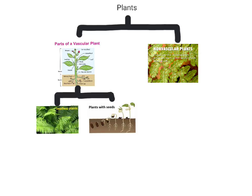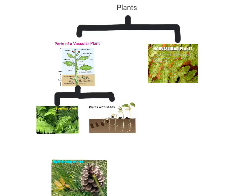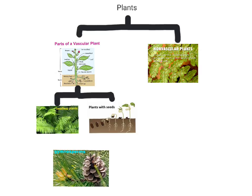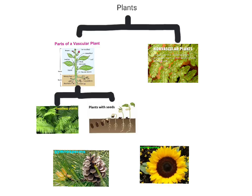Quick review on plant classification so far. Plants are divided into two groups: vascular and non-vascular. Vascular plants have vascular tissues that help transport water and nutrients around in the plant, and can be divided into two groups as well — seedless plants and seed plants. Our last classification is going to be with seed plants, which are divided up into gymnosperms and angiosperms.